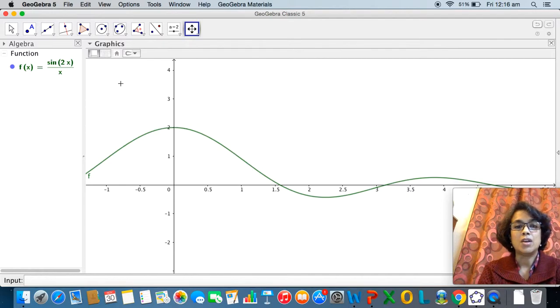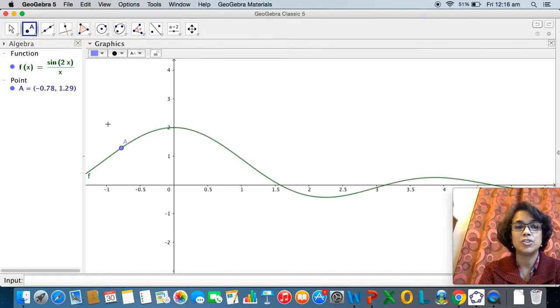Alright so now, suppose I take a point on the graph, so I use the point tool and tap somewhere on the graph of the function. I get a point A and GeoGebra shows me its coordinates in the algebra view.